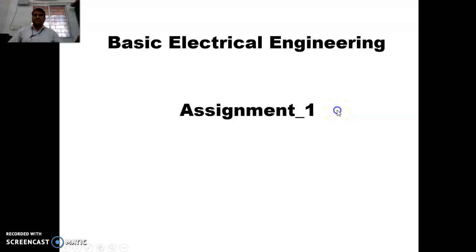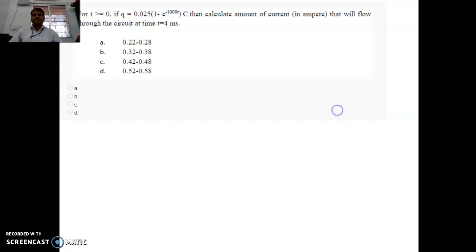Welcome to the lecture in Basic Electrical Engineering. Here we are going to discuss assignment questions. The given quantity is the charge: charge is 0.025 into 1 minus e to the power minus 1000T. And you have been asked to find out the value of current. So current is nothing but dQ by dT.